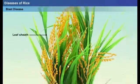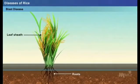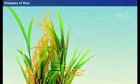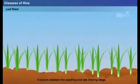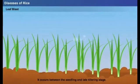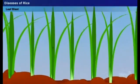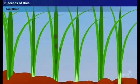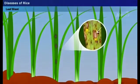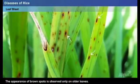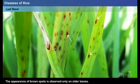Usually the leaf sheath and roots are left unaffected. Based on the location of infection, the disease is described as leaf blast, which occurs between the seedling and late tillering stage. When the fungus attacks a young leaf, purple spots are formed initially. Later the spots enlarge into a spindle shape with gray or white center surrounded by purple to brown colored borders, followed by the appearance of a yellow zone.